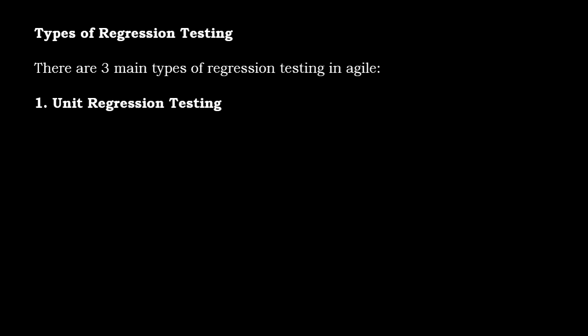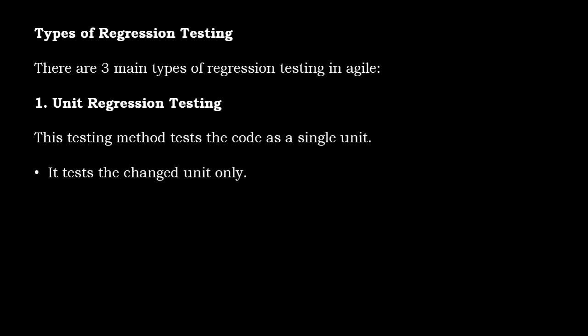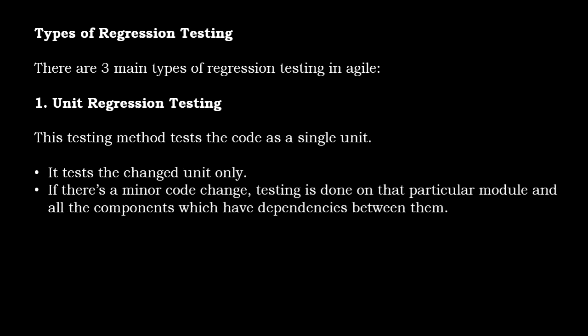There are majorly three main types of regression testing in Agile. The first is unit regression testing. This testing method tests the code as a single unit — it tests the changed unit only. If there is a minor code change, testing is done on the particular module and all the components which have dependencies between them.